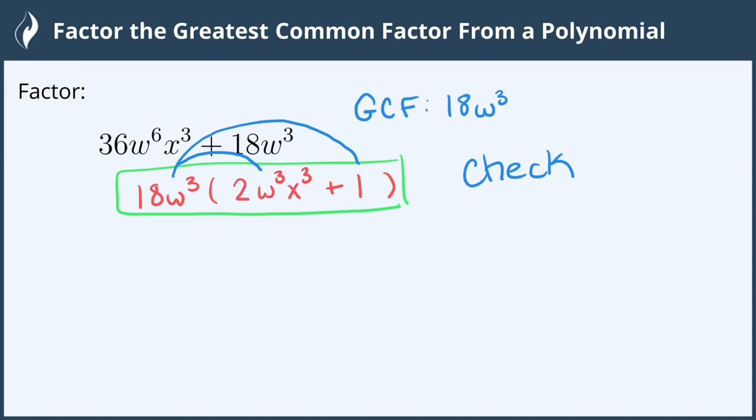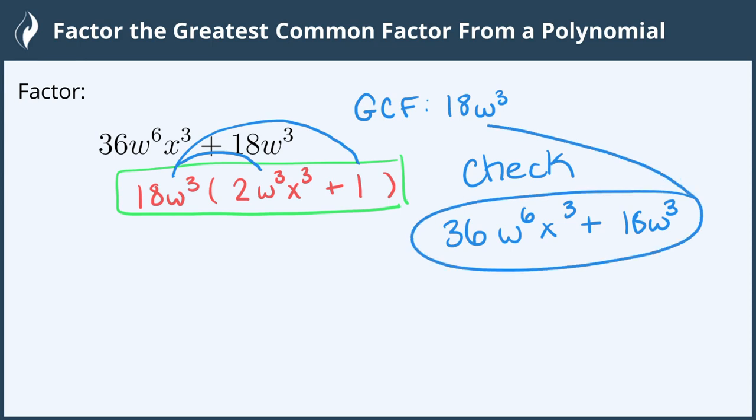So 18 times 2 is 36. w to the 3rd times w to the 3rd gives us 6 w's, so w to the 6th, and we still have x to the 3rd there, and then 1 times 18w cubed is 18w cubed, which matches the original.